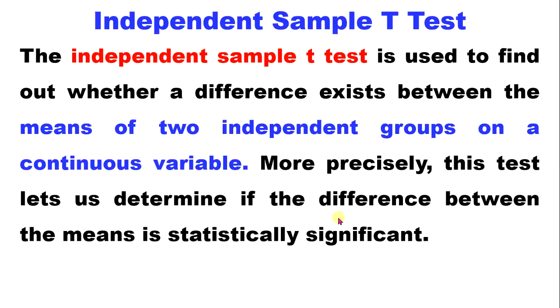As mentioned, a dependent variable is continuous. For example, is there any difference in cumulative GPA between male and female? Is there any difference between male and female in salary? Cumulative GPA and salary are continuous variables. The independent variable is categorical, different independent groups like male and female.